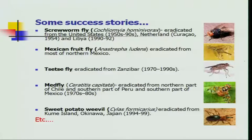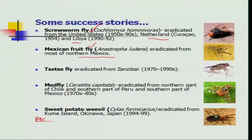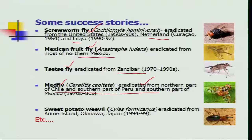Some success stories from the literature: first is screw worm fly management in various places in the United States, Netherlands, and Libya. Then the Mexican fruit fly on citrus was totally eradicated from northern Mexico. The tsetse fly, a major veterinary pest on higher animals including humans, has been eradicated from the African continent. The Mediterranean fruit fly — medfly — was eradicated from northern Chile to the southern part of Peru. And the sweet potato weevil was eradicated from an island in Japan.